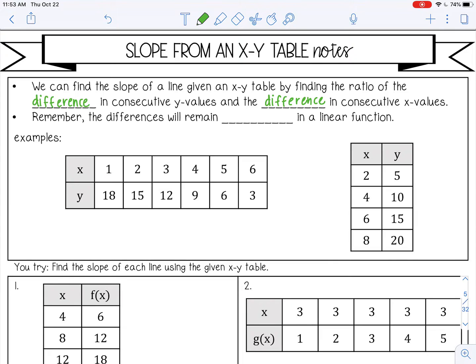So what does that mean? Well, ratio means the fraction, the division, and difference means subtraction. Consecutive means right next to each other, so like one and two, those are consecutive x values.